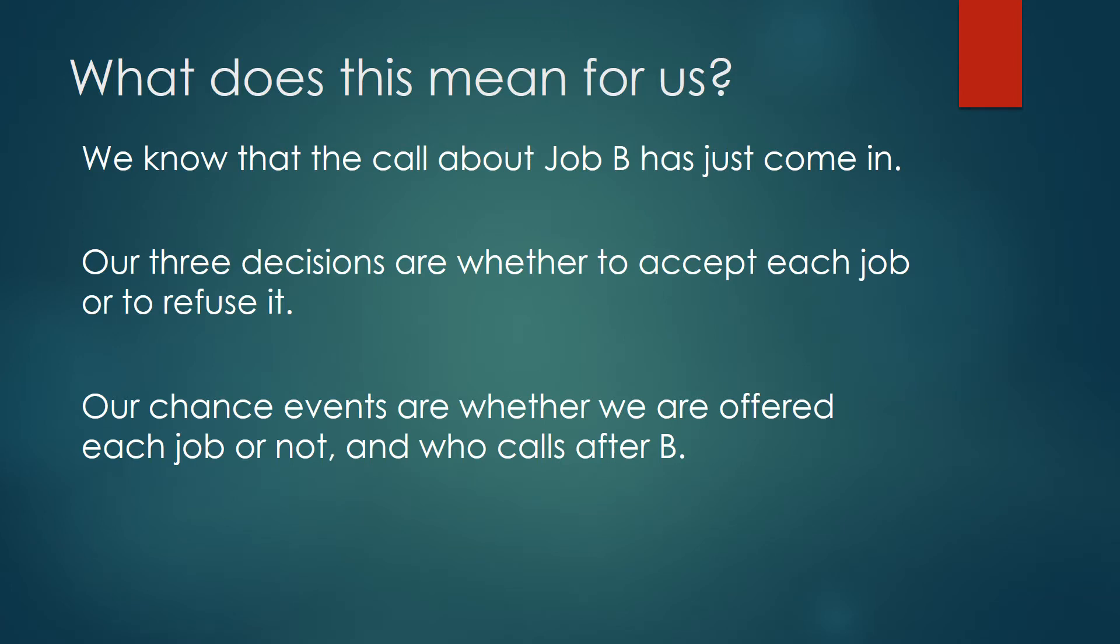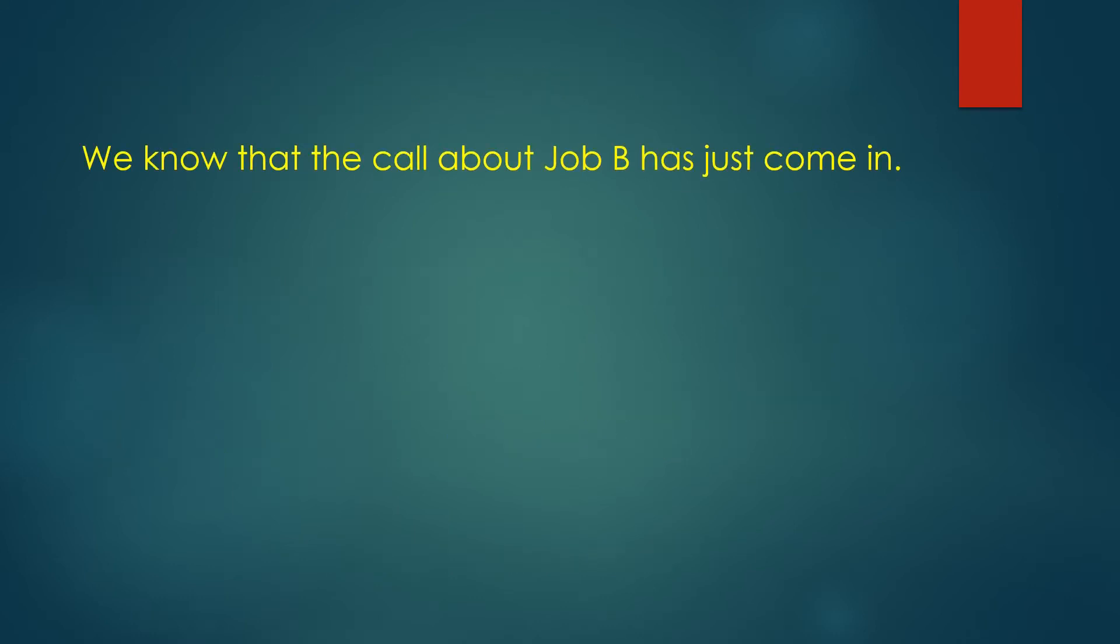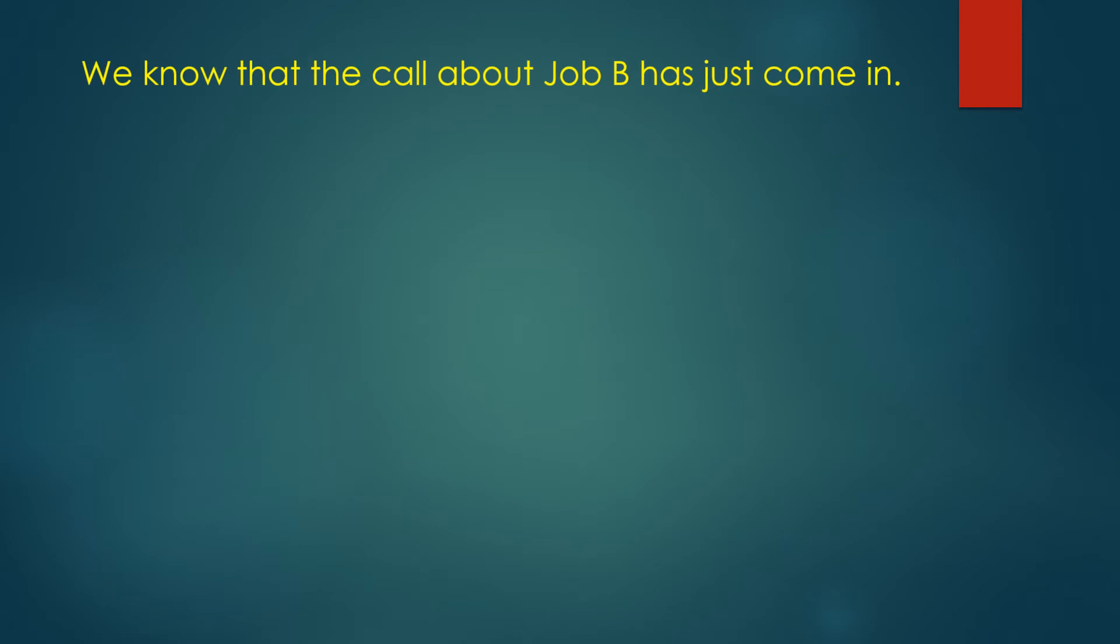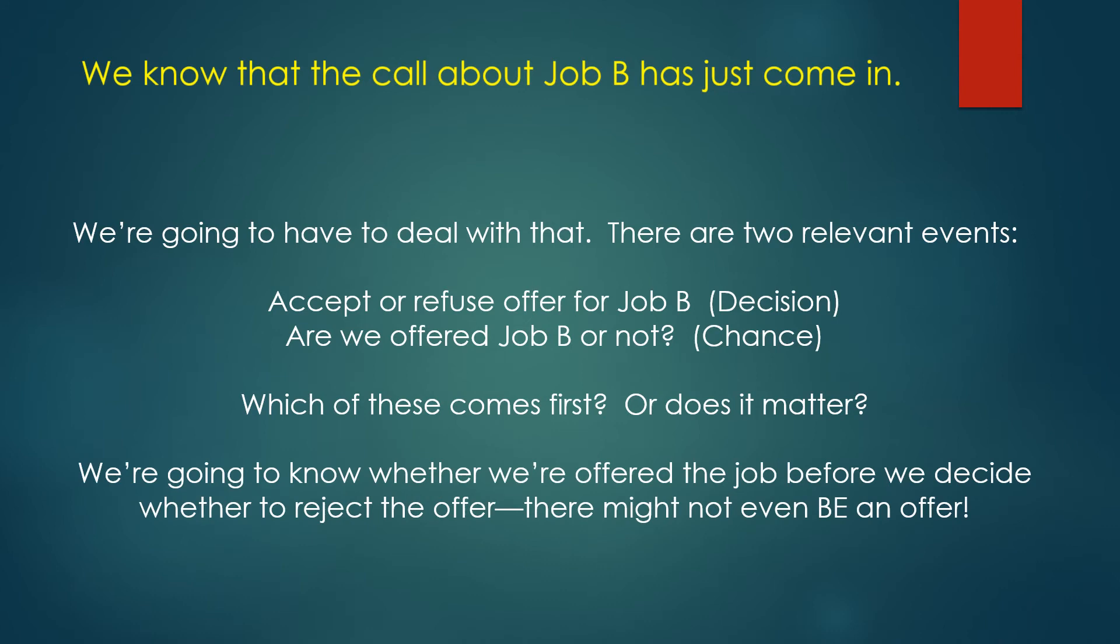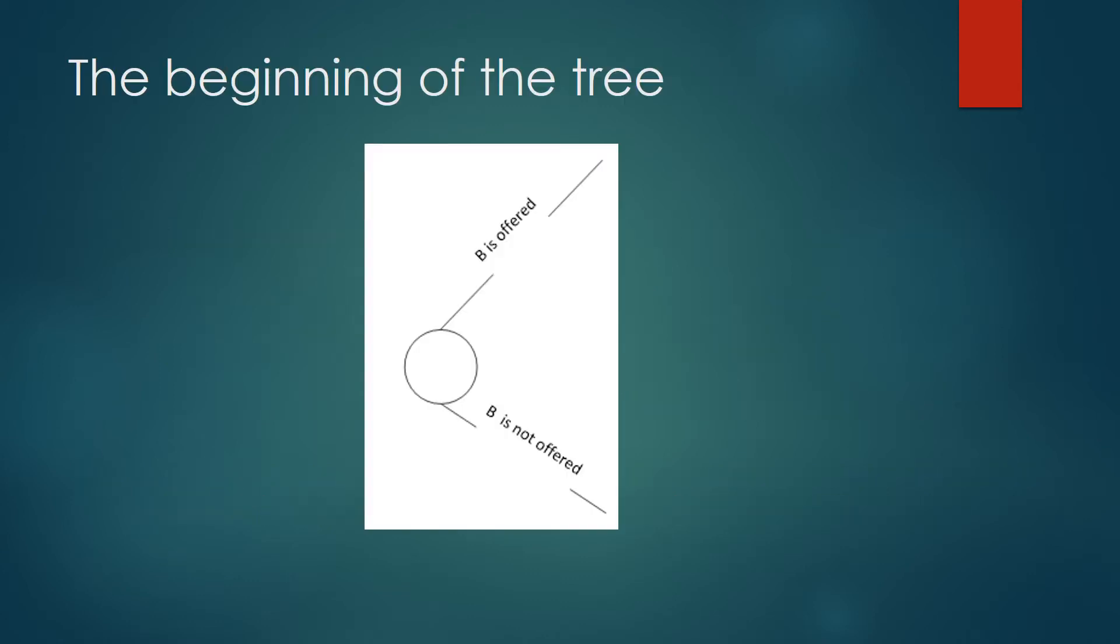Alright, let's put all of the stuff together. We know that the call from job B has just come in and we had three decisions about whether to accept each job or refuse them. We have four chance events: whether a job's offered or not and who calls after B calls. So out of these things, which comes first? Well it's pretty obvious, isn't it? I mean we just said we know that the call about job B has just come in. That's something that we're going to have to deal with. What deals with job B? Well we have a decision whether to accept or refuse the offer, and we have a chance event whether we're offered the job or not. I'm going to say we for Shawn just to make it simple in terms of our talking. Well does it matter which order these come in? Does one have to come before the other? Yes. We can't decide whether or not we're going to accept the job until we actually have the job offer. If we're not offered the job, we don't get to make a decision about whether to accept the job or not.